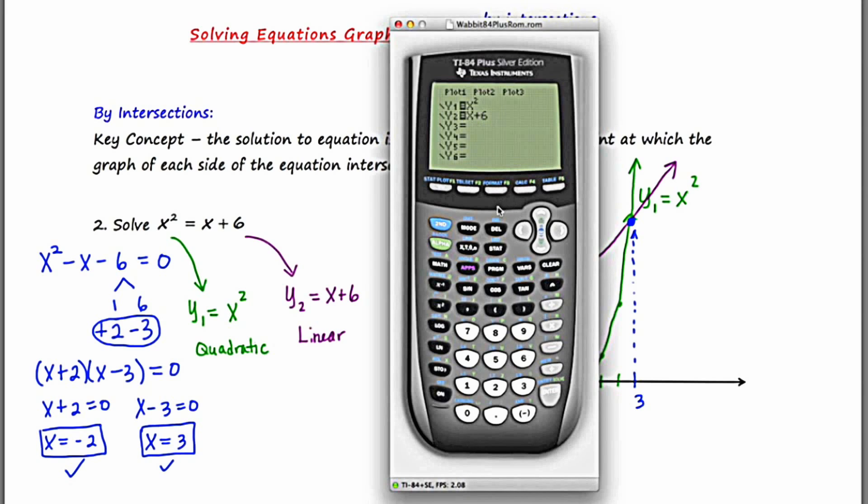And I'm going to use that zoom six again. Let's see if that's going to be a suitable window. We could always adjust it if necessary. So I'll start with zoom six. And we should see a parabola and a line. There's the parabola. There's the line.